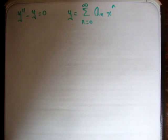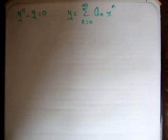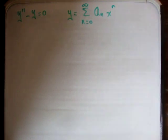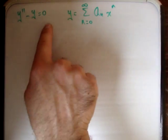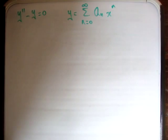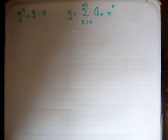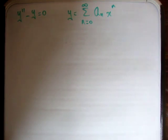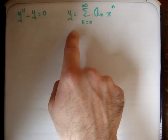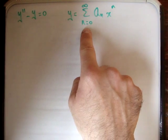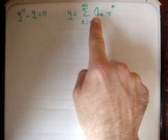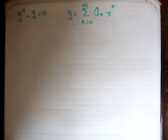In this video I'm going to start with an example of solving a differential equation with a power series. We've defined a differential equation y double prime minus y is equal to 0, and I've let y equal to the sum from n equals 0 to infinity of a sub n times x to the n.